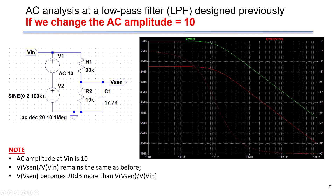For these two transfer functions, the phase remains the same — they are overlapping. So remember, it is convenient to set the AC amplitude as 1, so that Vsense will equal Vsense over V1 in the Bode plot.